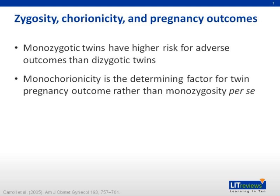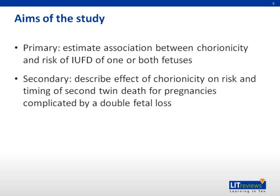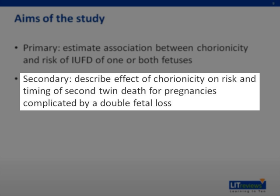This is a screen capture of the article header, entitled 'The Impact of Chorionicity on Risk and Timing of Intrauterine Fetal Demise in Twin Pregnancies,' published in late 2012. The authors indicated two main aims for this study. The first was to determine how chorionicity relates to the risk of intrauterine fetal demise, IUFD, in one or both fetuses. The second aim was to describe how chorionicity — whether mono or dichorionic — impacted the risk and timing of a second death in pregnancies where a first fetal death had occurred.